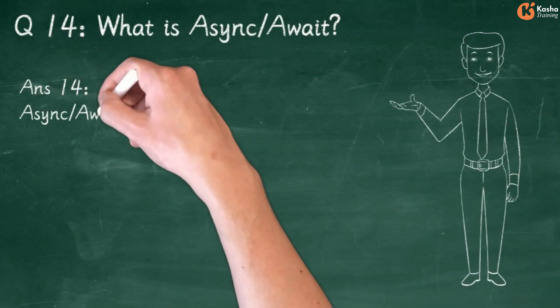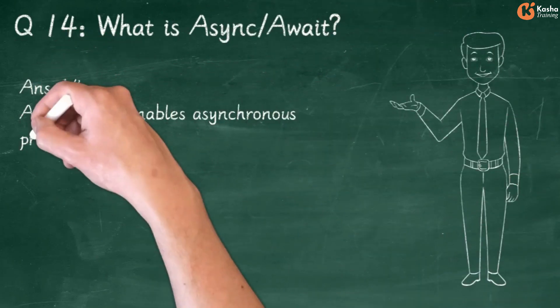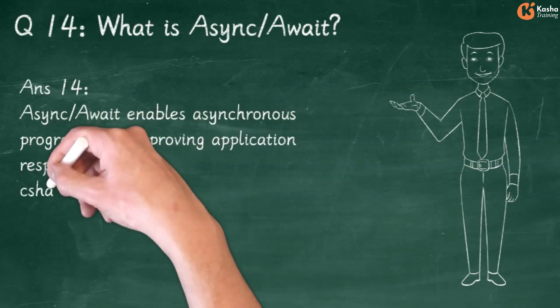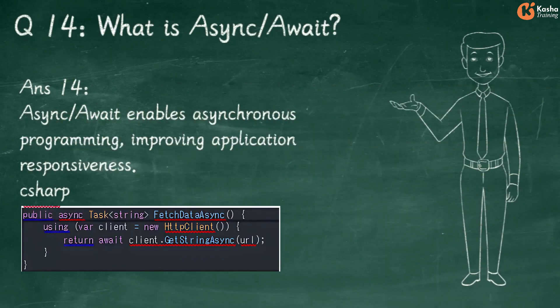Answer 14: Async Await enables asynchronous programming, improving application responsiveness. In C#: Public Async Task<String> FetchDataAsync using Var Client = New HTTPClient, Return Await Client.GetStringAsync(URL).